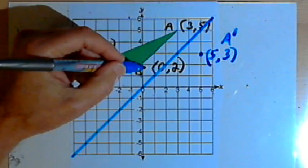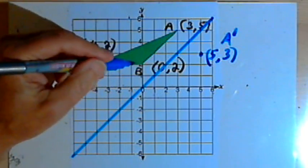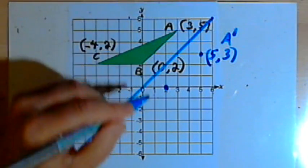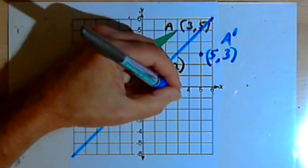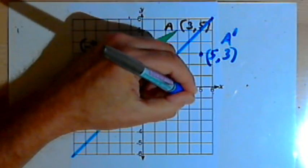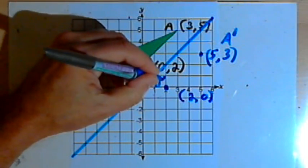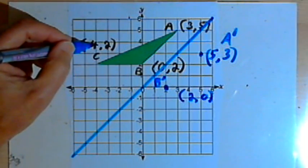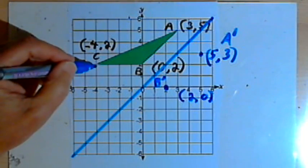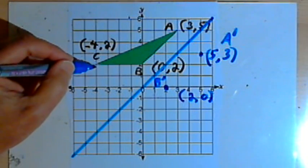Point B is at 0, 2, so B prime is going to be at 2, 0. So that's B prime. And C is at negative 4, 2, so C prime is going to be at 2, negative 4.